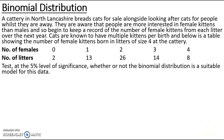In this example we're going to look at the goodness of fit of the binomial distribution when parameters are unknown. This example is about a cattery in North Lancashire which breeds cats for sale alongside looking after cats for people whilst they're away. They're fully aware that people are more interested in having a female kitten rather than a male, and so begin to keep a record of the number of female kittens from each litter over the next year.